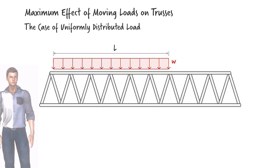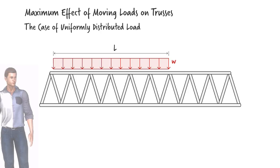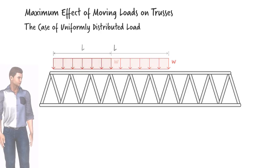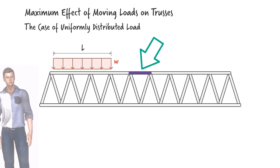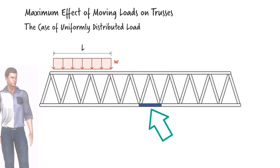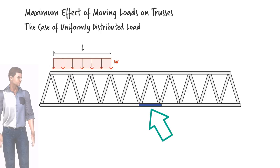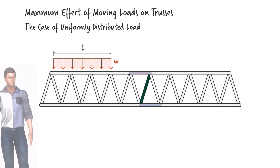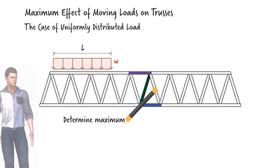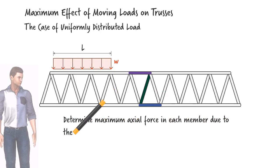In this lecture, we are going to examine the maximum effect of such a load on three specific members in a truss bridge. A member along the top cord of the truss, a member along the bottom cord, and a diagonal member connecting the top cord to the bottom cord. We are going to determine the maximum compressive and tensile force in each member as a train moves across the bridge.